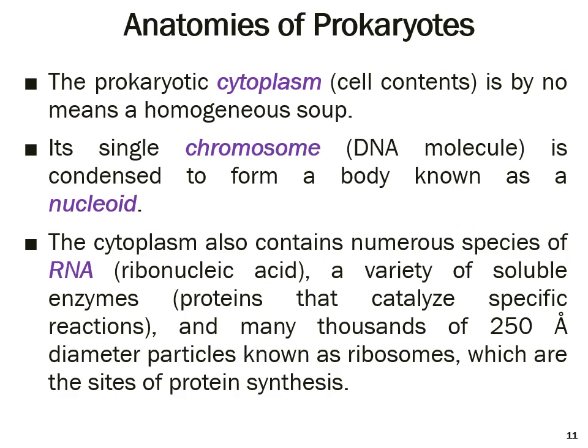Prokaryotic cytoplasm is by no means a homogeneous soup — it contains different things. For example, there is a single chromosome in condensed form containing DNA material, called the nucleoid, because it does not have a membrane. If it had a membrane, it would be called a nucleus. The cytoplasm also contains different species of RNA (ribonucleic acid), a variety of soluble enzymes — proteins that catalyze specific reactions — and many thousands of ribosomes, which are the sites of protein synthesis, with a diameter of around 250 angstroms.